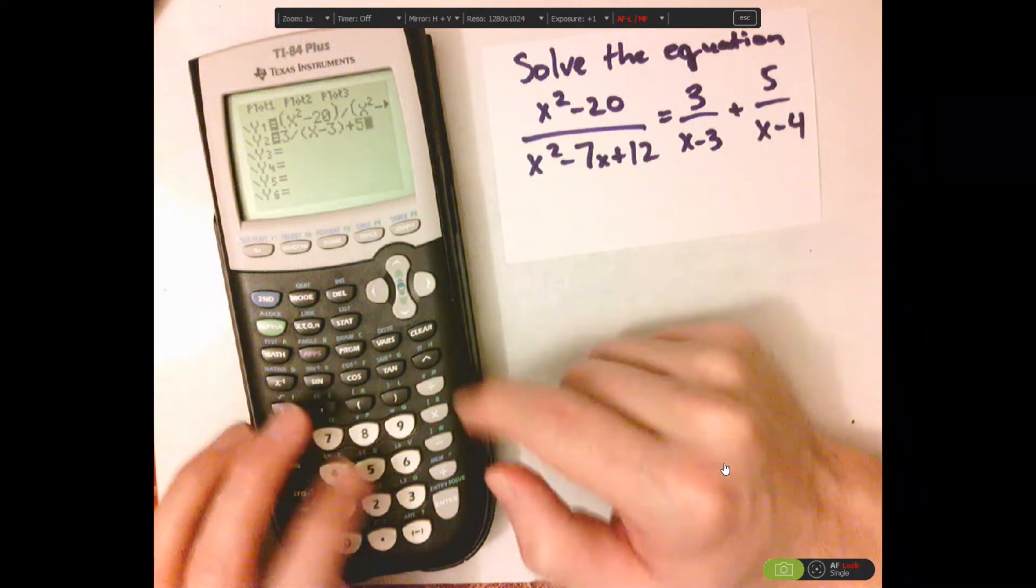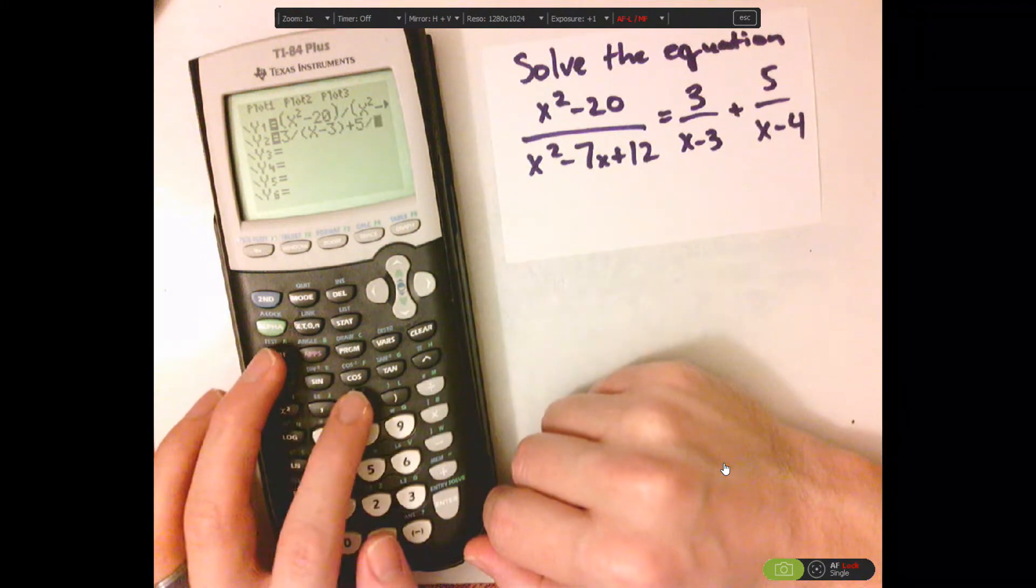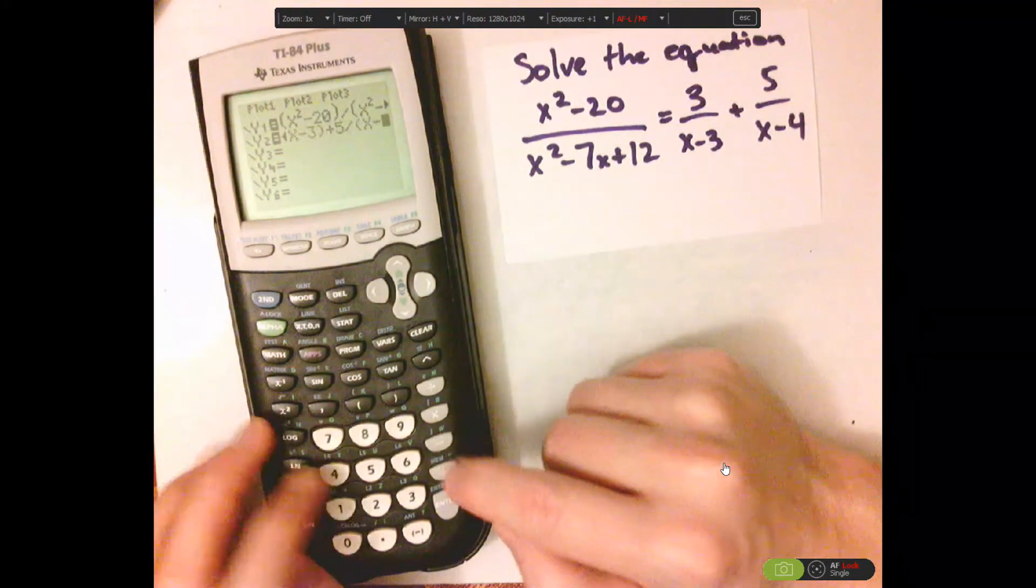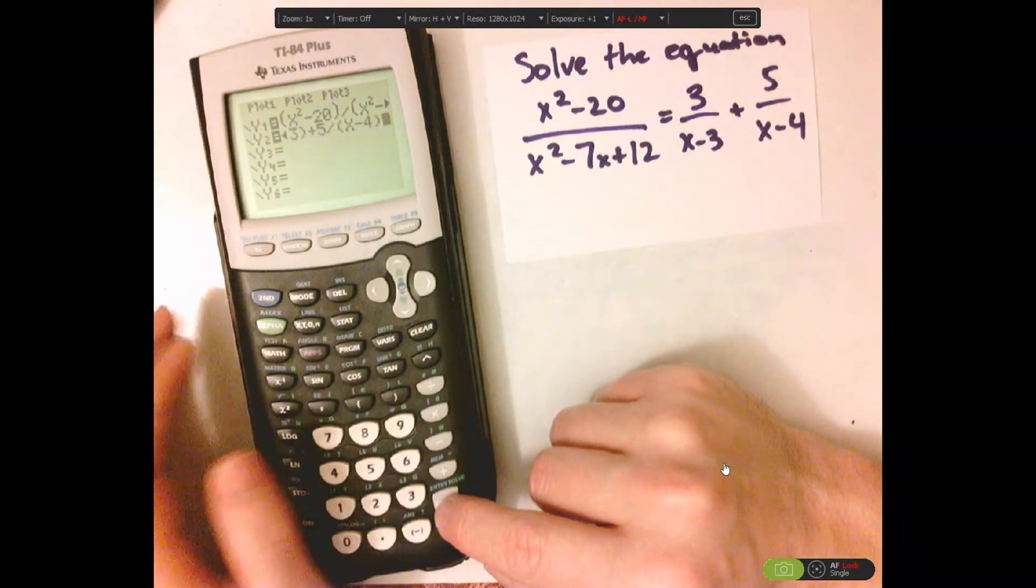plus 5, divided by, parentheses, x minus 4, closed parentheses.